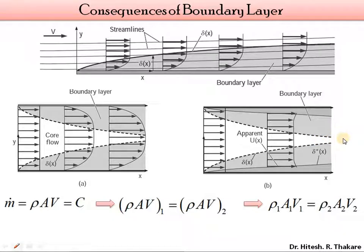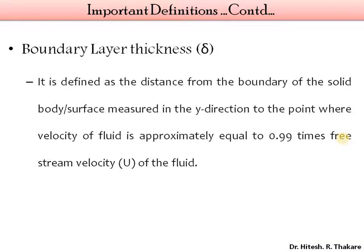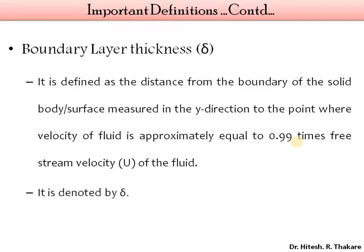In reference to this, we will understand some important definitions. The first one is boundary layer thickness itself. It is the distance measured from the boundary of the solid surface in the direction perpendicular to the flow (the y direction), up to the point where the velocity of the fluid is approximately equal to 0.99 times the free stream velocity. It is denoted by the symbol delta.